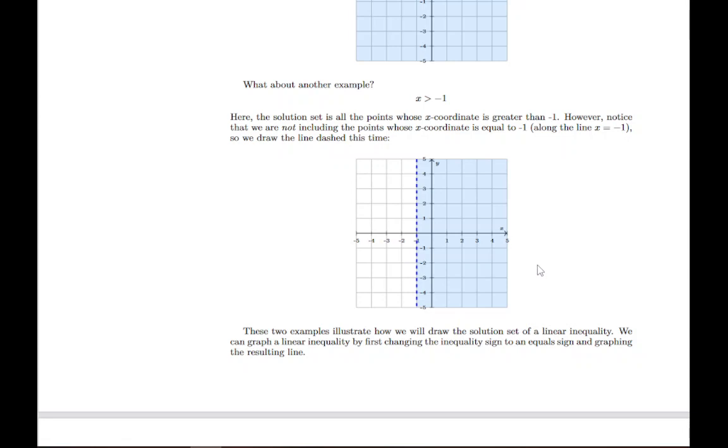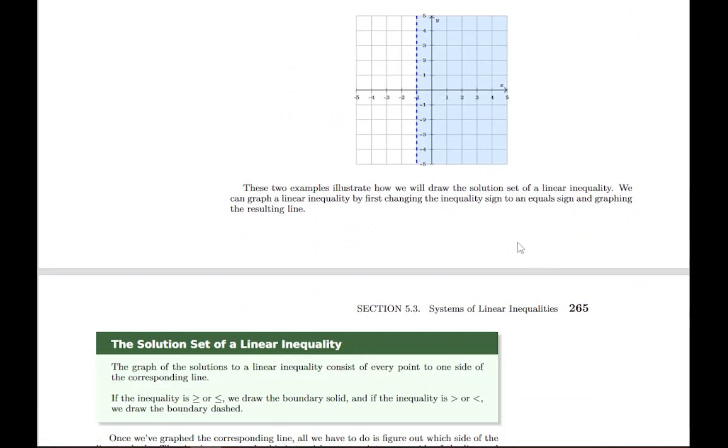In short, whenever you have an inequality that's like less than or equal to or greater than or equal to, that includes the number you're looking at and so you draw it solid. And then everything else, all the other examples are just variations of this, but that's the basic idea that an inequality, a linear inequality like this, is going to be the line either solid or dashed and then one side of that shaded in.